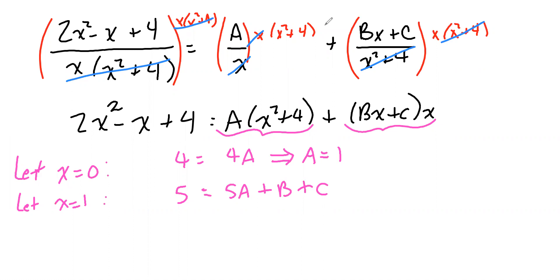Now the problem with this is we've got two unknowns. We know what the A is. We know A is equal to 1. So we can go ahead and put that in for the A, and we'll get 5 equals 5 + b + c. And if we subtract 5 from both sides, this implies b + c is equal to 0.